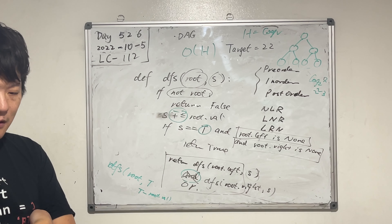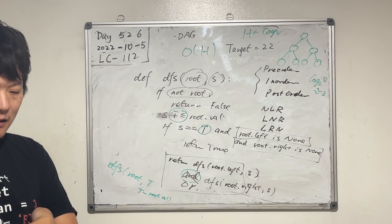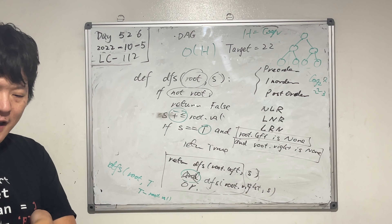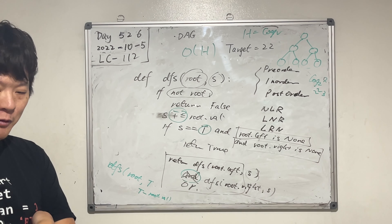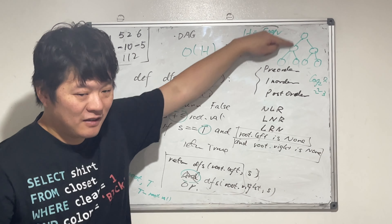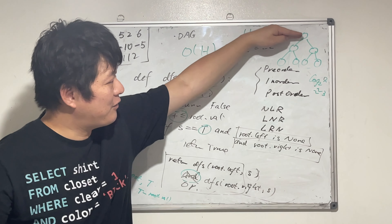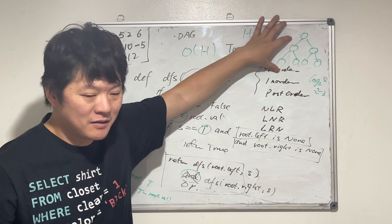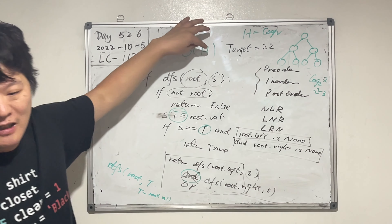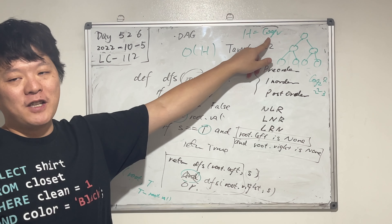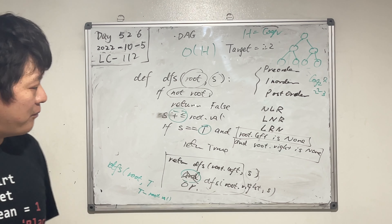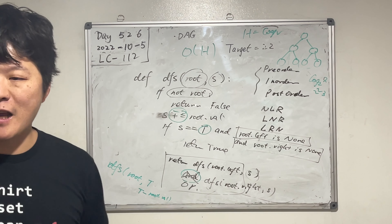What's the time complexity? O(n) — n is the number of nodes in the tree. Space complexity? For the recursion, it needs to go as deep as h — h is the height. In a balanced tree, h is roughly equal to log n. That's it for the day, bye bye!